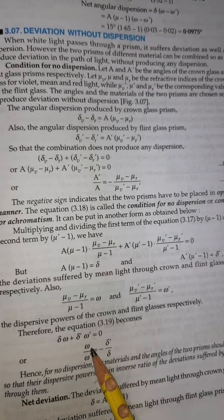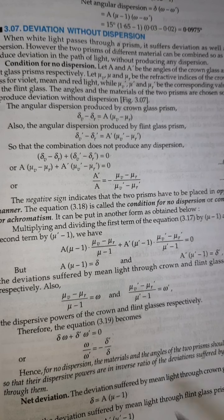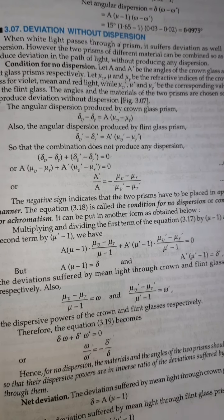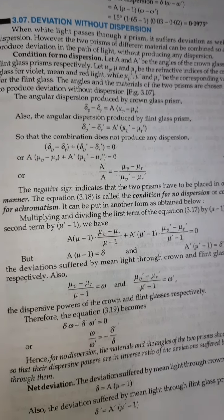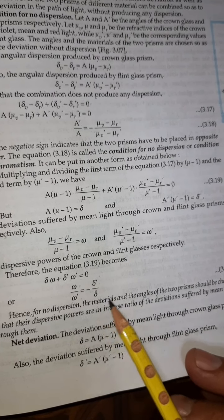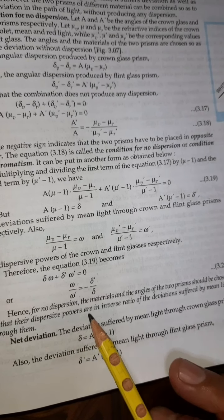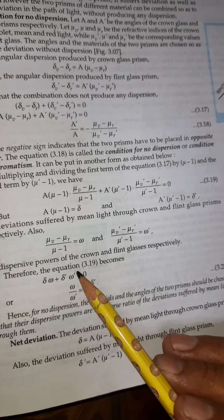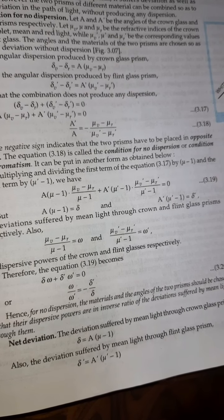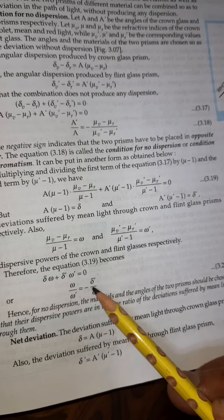Delta times omega plus delta dash times omega dash should be zero, giving omega upon omega dash equal to minus delta dash upon delta. The negative sign indicates the glass prisms must be kept antiparallel. Hence, no dispersion: the material and angle of two prisms must be chosen so that their dispersive powers are in inverse ratio of the deviation suffered by the mean light.